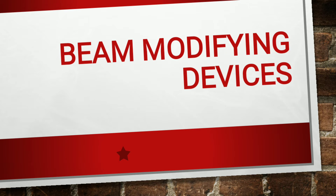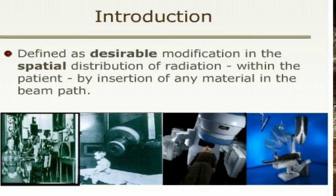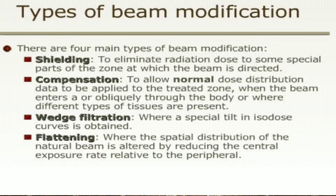Today we will discuss beam modifying devices. These are defined as desirable modification in the spiral distribution of radiation within the patient by inserting of any material in the beam path. There are four types of beam modification: shielding, compensation, wedge filtration, and flattening.